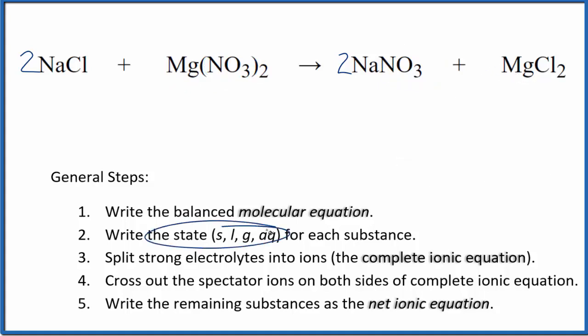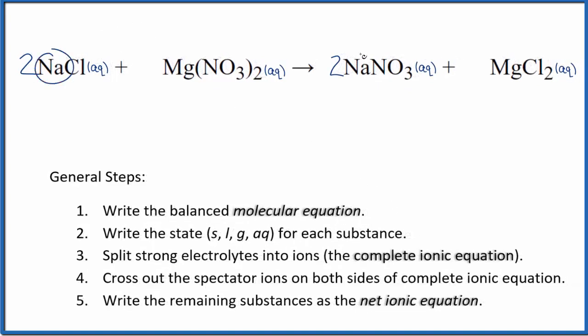Now we can write the state for each substance. Compounds with sodium are very soluble. Compounds with the nitrate ion, very soluble. And in general, compounds with the chloride ion are soluble. You can see that all of these compounds are aqueous.